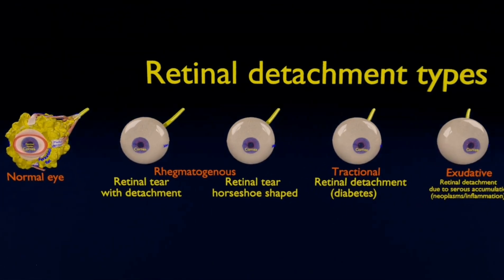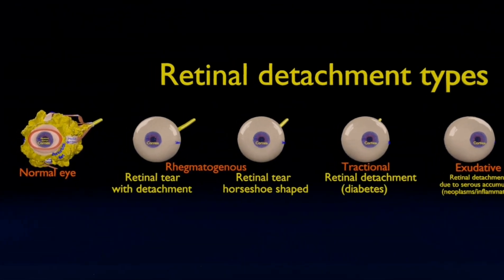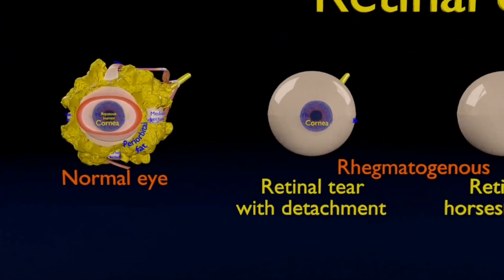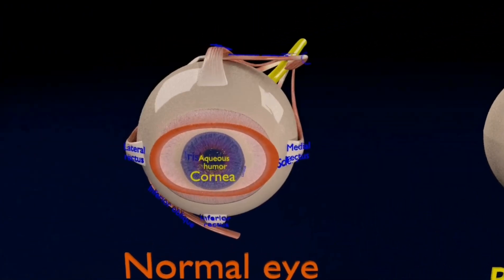This video illustrates the retinal detachment types of eye. For comparison, we are showing a normal eye with its vitreous for easy understanding.